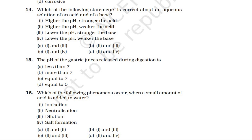Question 14 asks which statement is correct about an aqueous solution of an acid and a base. The answer is option D: higher the pH, weaker the acid, and lower the pH, weaker the base. This is the relationship between the two.